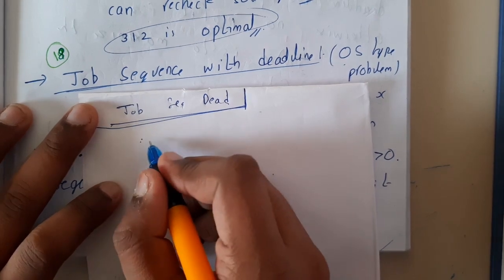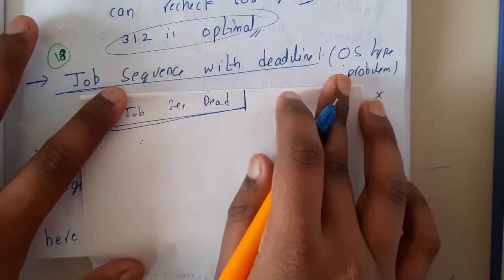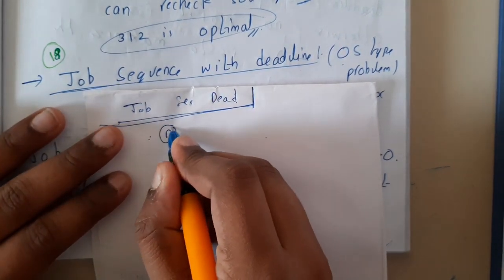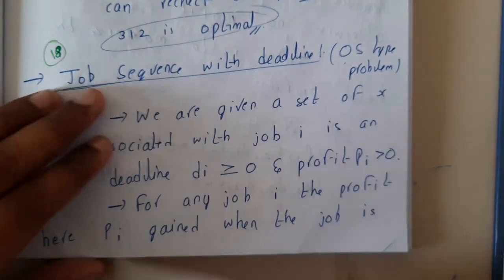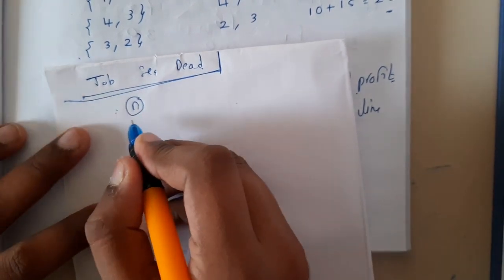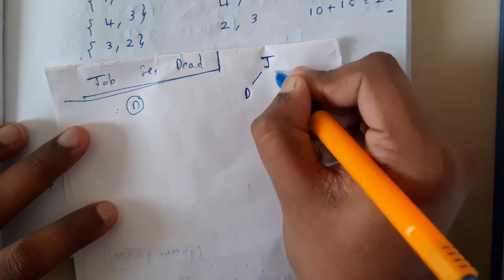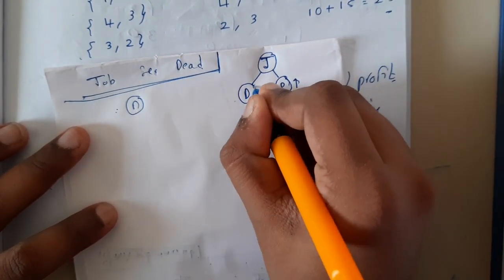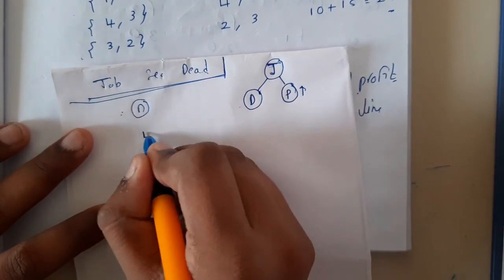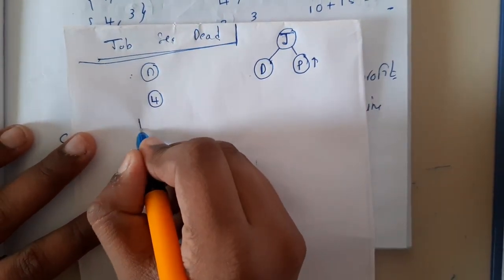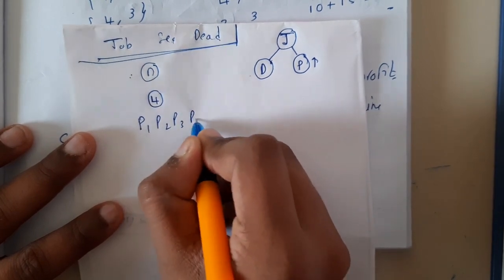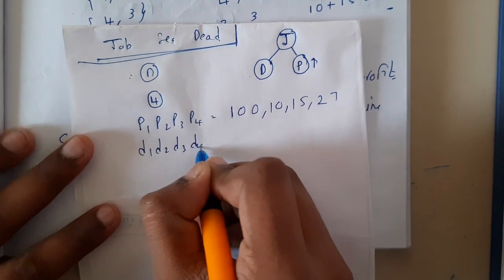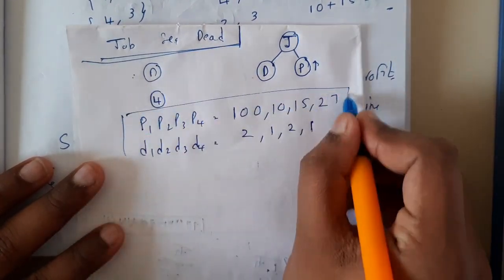Basically, assume that you are a freelancer. There are many freelancers who take small projects and work on them within a particular deadline. Assume that you got some n number of jobs. Each and every job will have a deadline as well as a profit — the money you get for completing the project within that deadline. So assume you are given four projects with profits p1, p2, p3, p4 of 100, 10, 15, 27, and deadlines d1, d2, d3, d4 of 2, 1, 2, 1.